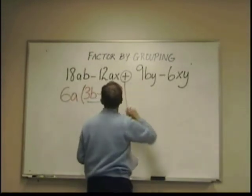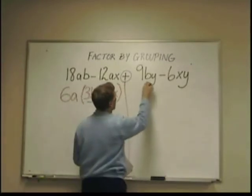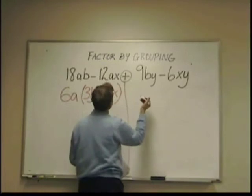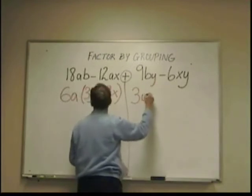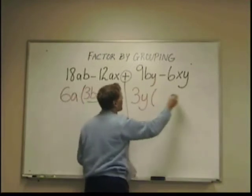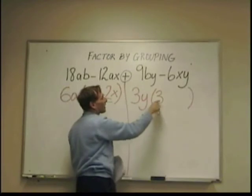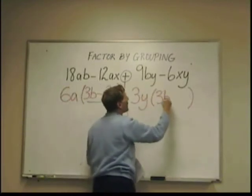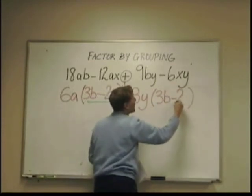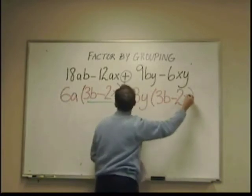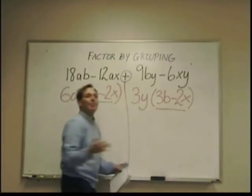I have nine b y minus six x y. My common element here would be three. And I have a y on both sides. Leaving me with three. Nine divided by the three leaves me three. The y's cancel. I have a b. Bring down that minus right here. Three into six is two. And the y's cancel, leaving me an x. Look at that. Three b minus two x. They match on both sides. That is a factor.